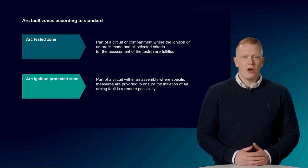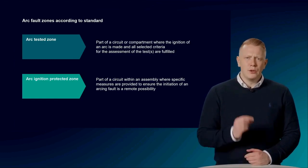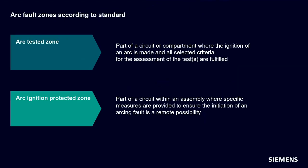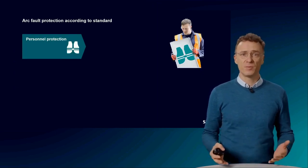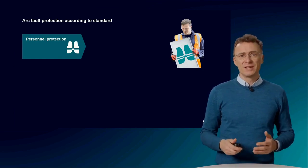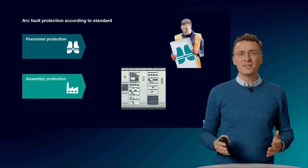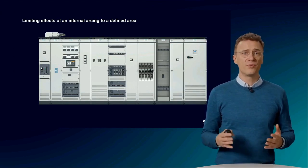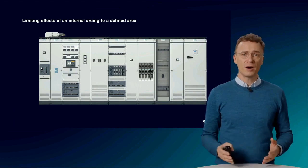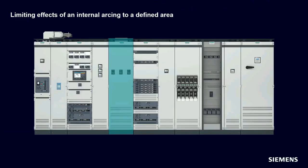It is important to define the protection goals in advance. The minimum requirement is personal protection, meaning a person standing in front of the system will not be harmed. In addition, system protection can also be achieved, which is important for avoiding or reducing downtime. The effects of the arc fault are then limited to a defined part of the system — for example, a cubicle of the switchboard, which would have to be replaced after the event. Or the area can be narrowed down further to one compartment.